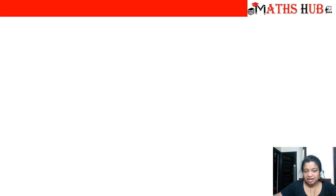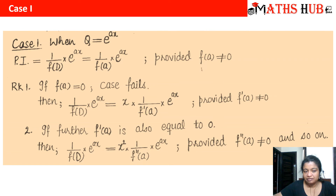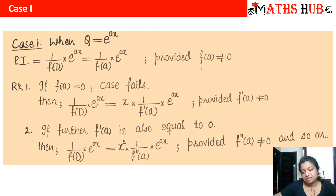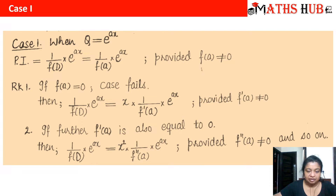The first case is whenever we have an exponential term on our right-hand side, we replace D with the exponent value. If the denominator becomes 0 (case failure), we multiply the numerator by x, take the derivative of the denominator, and replace D by the value again.